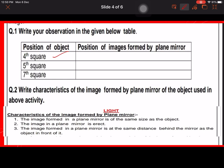If you keep the object at the 4th square, then the position of the image formed by the plane mirror will also be at the 4th square behind the mirror. If you keep it at 5th square then it will also be 5th, and 7th then it will also be 7th. The position of the object and image will be in the same position.